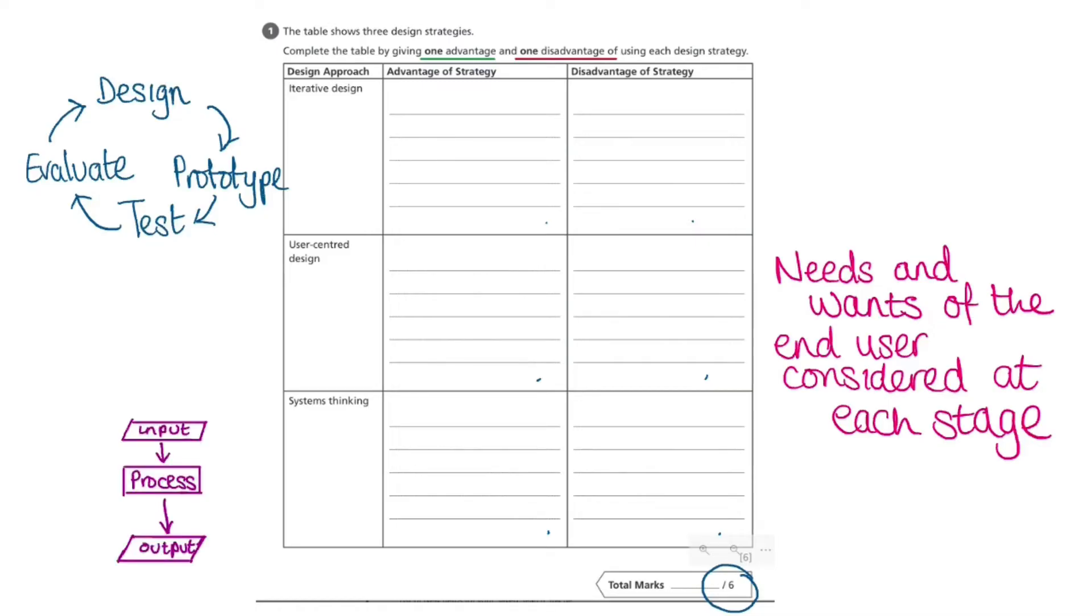The third design approach that we've been given is systems thinking. This is where the design process is split into subsections of the input, process, and output. This is generally used in mechanical or electrical systems. Metaphorically, I always like to remember systems thinking as similar to a vending machine or a toy grabber in an amusements arcade. For instance, if I was using a toy grabber machine, I would put my money in, which would be the input. I would operate the arm of the toy grabber, which would be akin to the process, and receive my winning toy as the output.